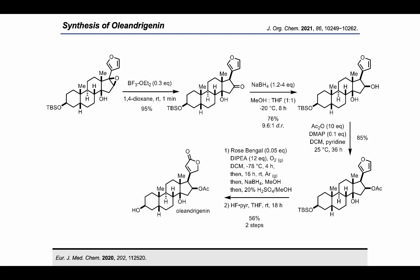The conversion into oleandrogenin was subsequently carried out using the previously published protocol from the Wicha group, which involved singlet oxygen to oxidize the furan moiety followed by a reductive rearrangement and acidic workup leading to the formation of the beta-C17 butenolide in 51% yield, along with deprotected oleandrogenin in 10% yield. Subsequent deprotection with HF·pyridine of the C3-TBS group completed the formation of oleandrogenin in 56% yield over two steps. The spectroscopic data matched the characterization data previously disclosed by the Wicha group, confirming the identity of synthetic oleandrogenin.